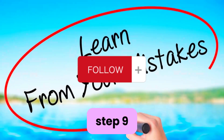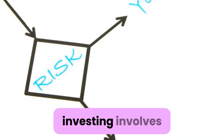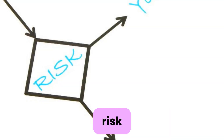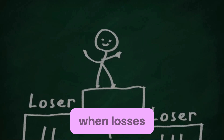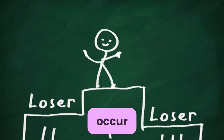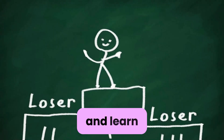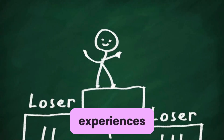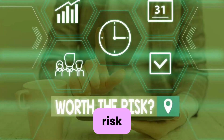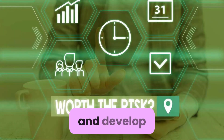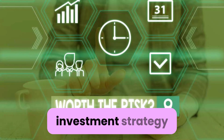Step 9: Assess and Learn from Mistakes. Investing involves risk, and it's normal to make mistakes along the way. When losses occur, take the opportunity to assess what went wrong and learn from those experiences. This will help you refine your risk management techniques and develop a more resilient investment strategy.